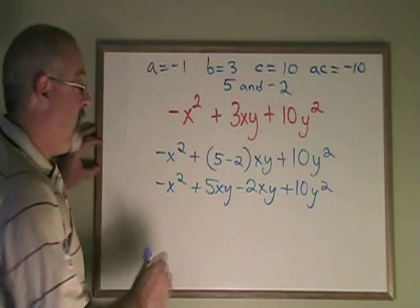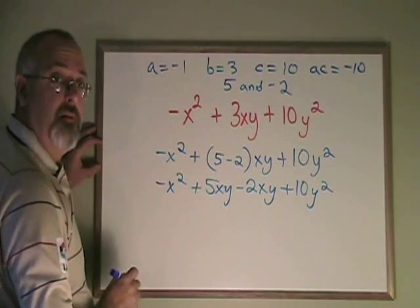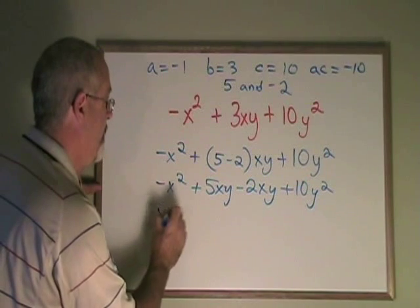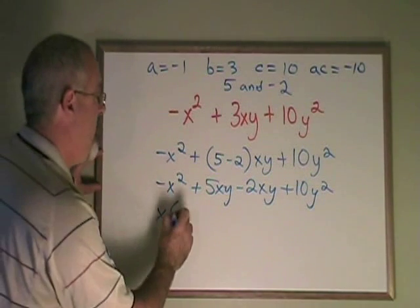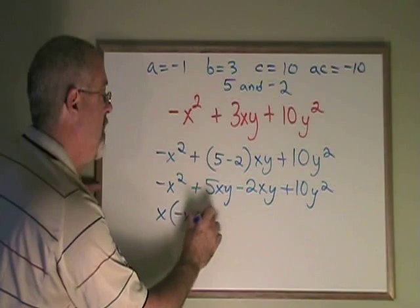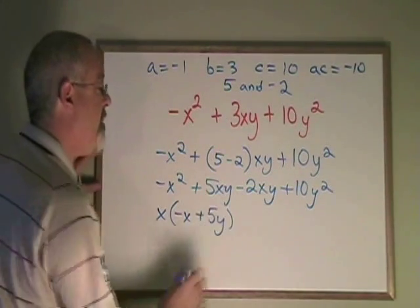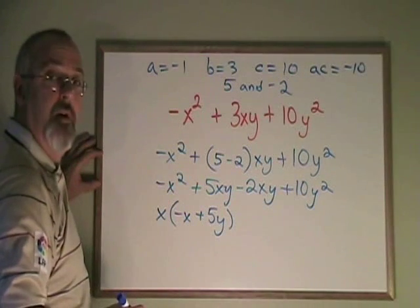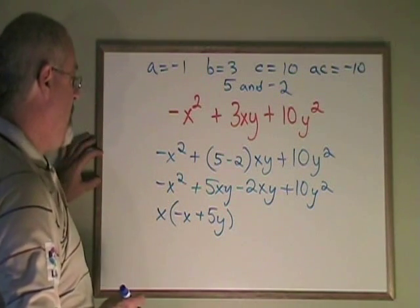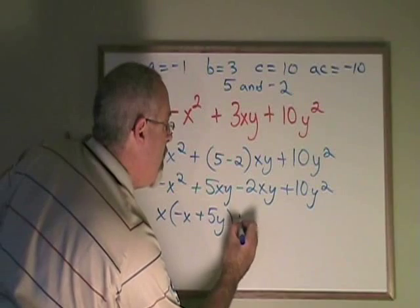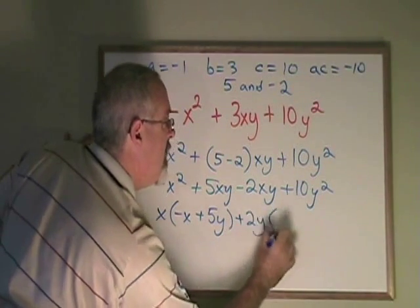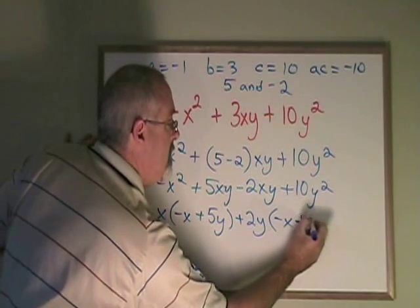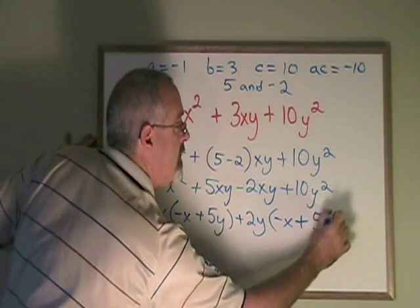The greatest common factor of these two terms is either x or negative x. Let's take out an x. And I end up with negative x plus 5y. The greatest common factor of these two terms is either 2y or negative 2y. Let's take out a 2y. And I end up with negative x plus 5y inside the bracket.